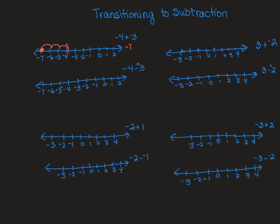Now instead of adding negative 3, I'm subtracting positive 3. I start at negative 4, and I'm subtracting. We know subtracting goes to the left. I'm going to subtract positive 3 — 1, 2, 3 — and you see, you get the same answer. So adding negative 3 and subtracting positive 3 is the same process. You're going to get the same answer.